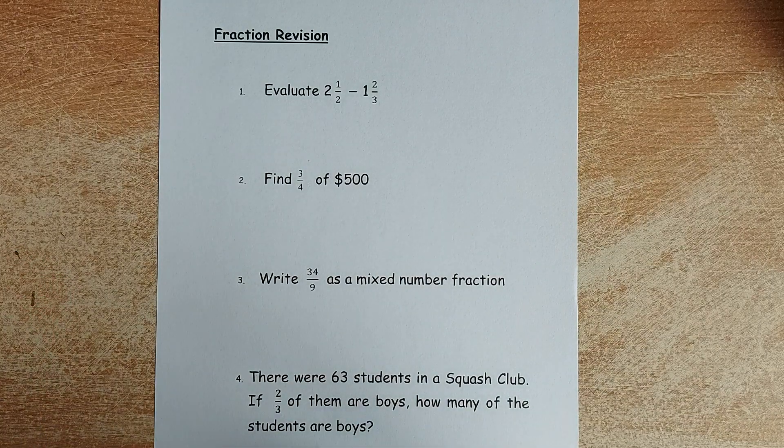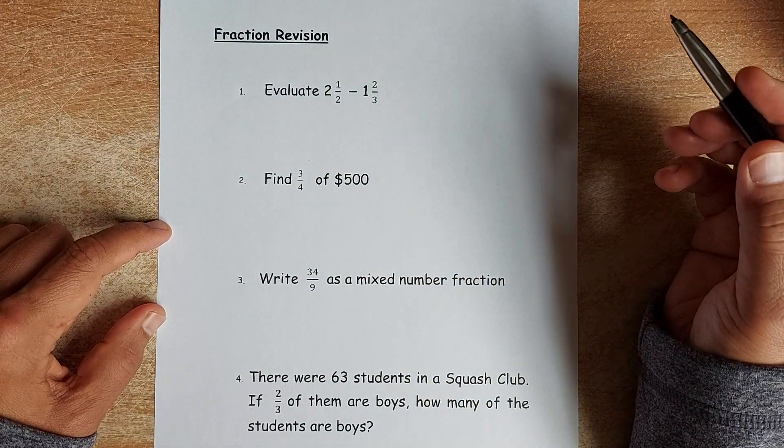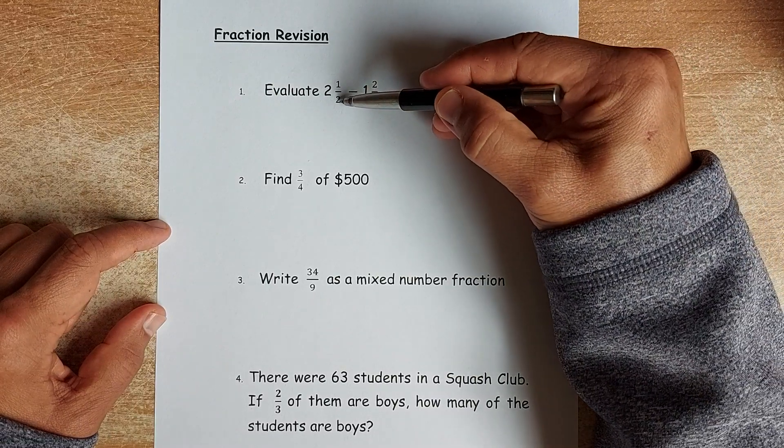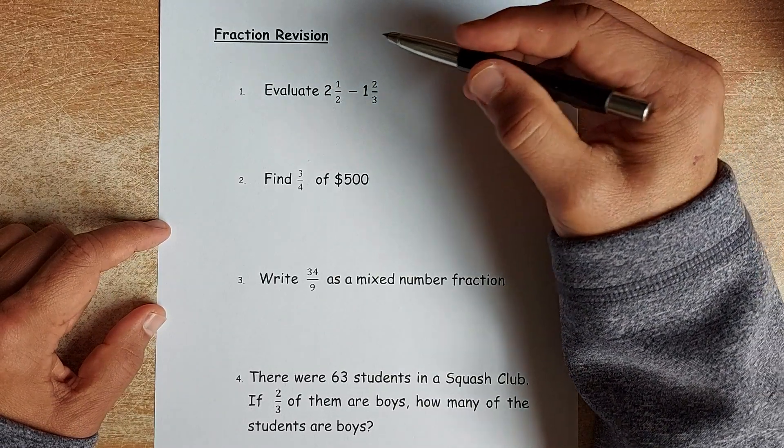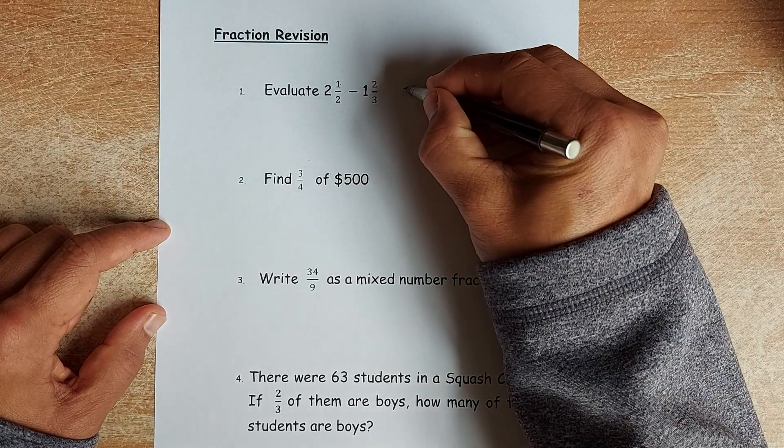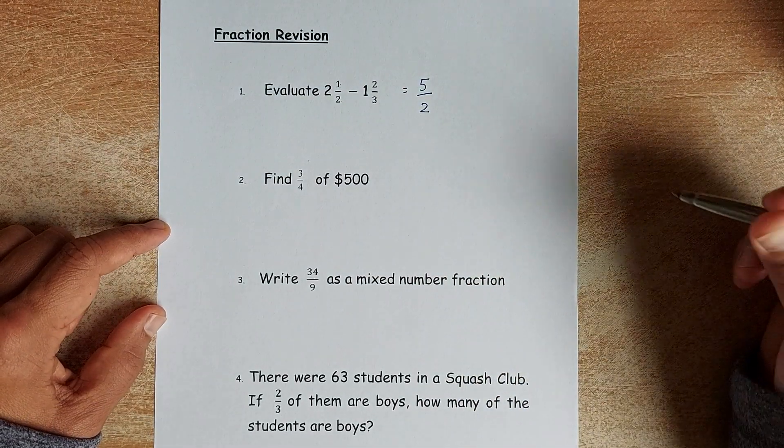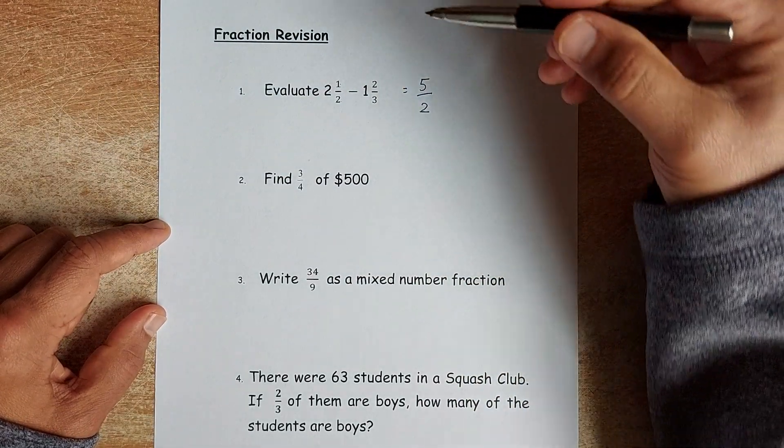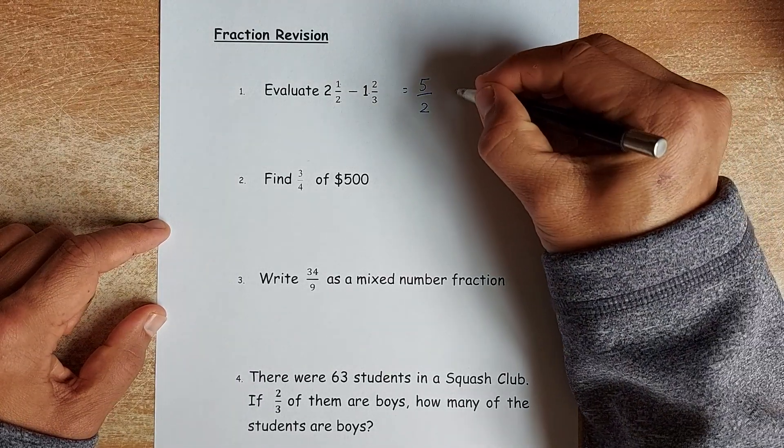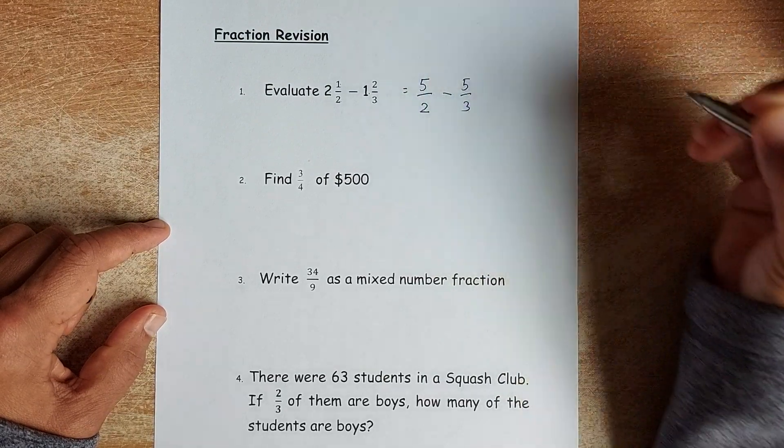In a mixed number subtraction, the first thing you do is you are going to change it into an improper fraction. To do that, it's very simple. You take 2 multiplied by 2 which is 4 and you plus the 1. So the 2.5 is the same as 5 over 2. And the same for 1 and 2 thirds. So again, 3 times 1 is 3 plus 2 will give you 5. So you are going to minus 5 over 3.